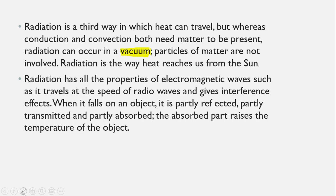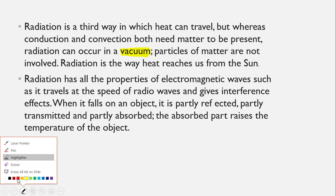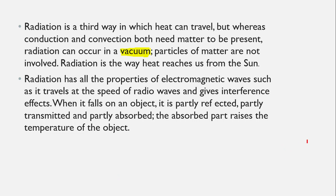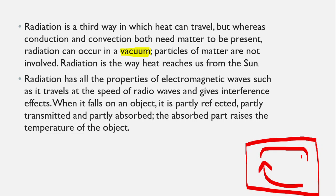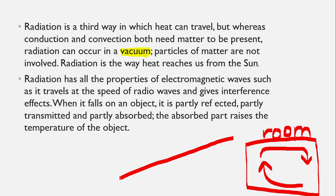We do not require a medium to transfer heat through radiation, unlike convection. In convection, air carries convective currents to transfer heat around a room. In conduction, there is no movement of the medium itself, but heat transfers through it — for example, along a rod from a region of high temperature to a region of low temperature. In radiation, however, there is no involvement of material or matter at all.